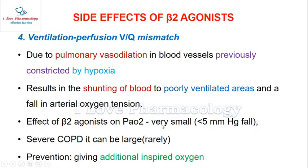The effect of beta-2 agonists on partial pressure of oxygen is very small in most patients, but in severe COPD the fall in arterial oxygen tension can be large, though it is seen rarely. This can be prevented by administering additional inspired oxygen.